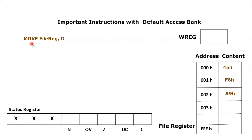The format of this instruction is: MOVF file_register, d. If you want to move any file, you write MOVF, then you mention the file you want to move, then the address of the file location, and then you mention the d-bit, which is the destination bit.